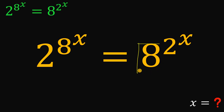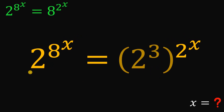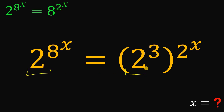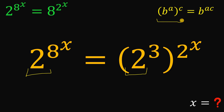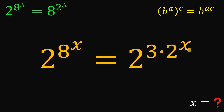This 8 we can rewrite as 2 raised to the power of 3, so we now have the same base of 2. Now let's continue. We will use some laws of exponent. Take note: when we have b raised to a raised to the power of c, this is equivalent to b raised to the power of a times c. So the right-hand side of our equation, we can rewrite this as 2 raised to the power of 3 times 2 raised to the power of x.